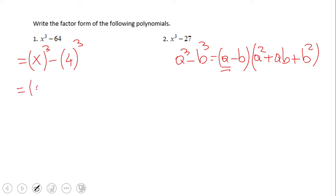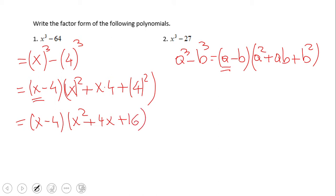Then we square the x to get x², we switch the sign - instead of minus we have plus - multiply the two terms x times 4, and then plus the second term squared which is 4². So the final form is (x - 4)(x² + 4x + 16). Go ahead and pause this video and try number two.